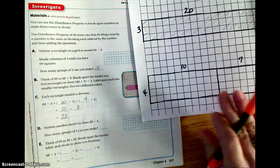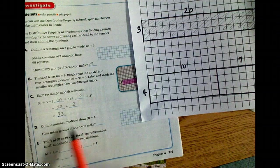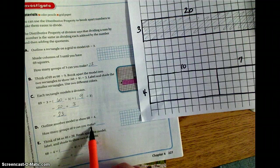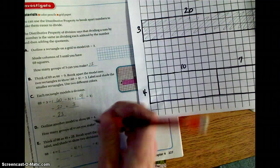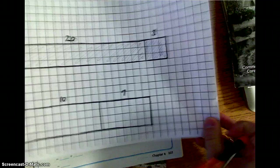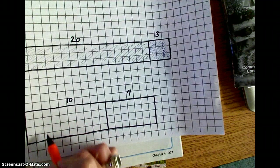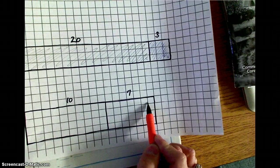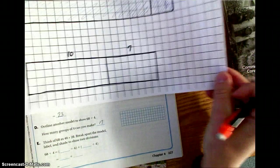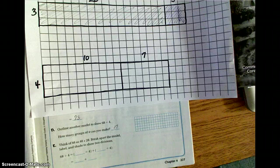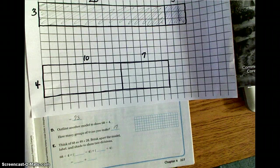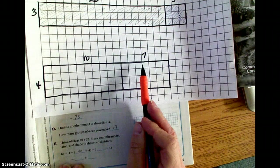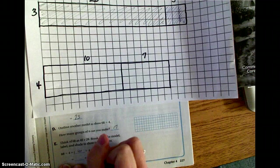Okay, I've already got the next one set up as well. I want you to outline another model to show 68 divided by 4. How many groups of 4 can you make? And that answer is going to be 17 groups of 4. So I have 17 groups of 4 broken into two smaller sections. A section of 10 and a section of 7. Using the distributive property that we learned in multiplication, I'm going to take 4 times 10, which is 40. So it's going to be 40 divided by 4. I'm going to take 4 times 7, which is 28, divided by 4.